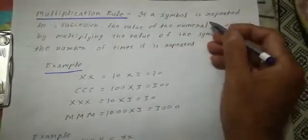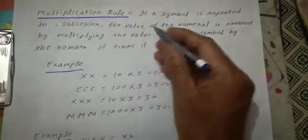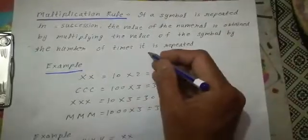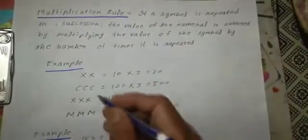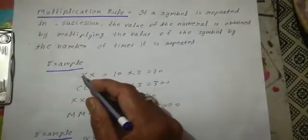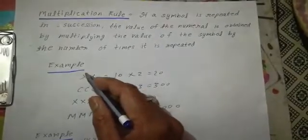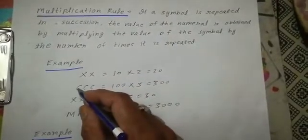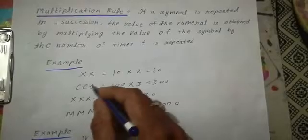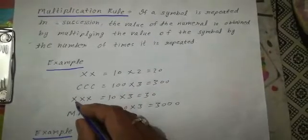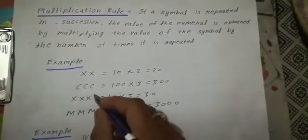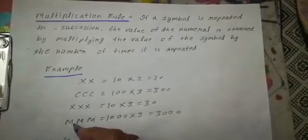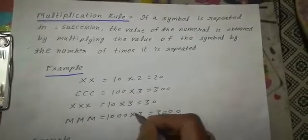Multiplication rule: if a symbol is repeated in succession, the value of the numeral is obtained by multiplying the value of the symbol by the number of times it is repeated. For example: XX — X is written 2 times, 10 into 2 equals 20. CCC — C is written 3 times, 100 into 3 equals 300. XXX — X is written 3 times, 10 into 3 equals 30. MMM — M is written 3 times, 1000 into 3 equals 3000.